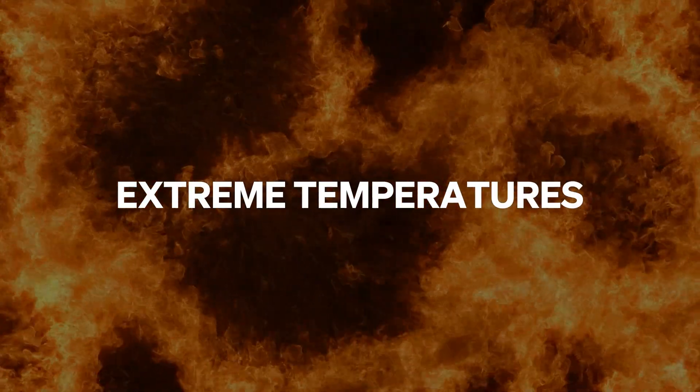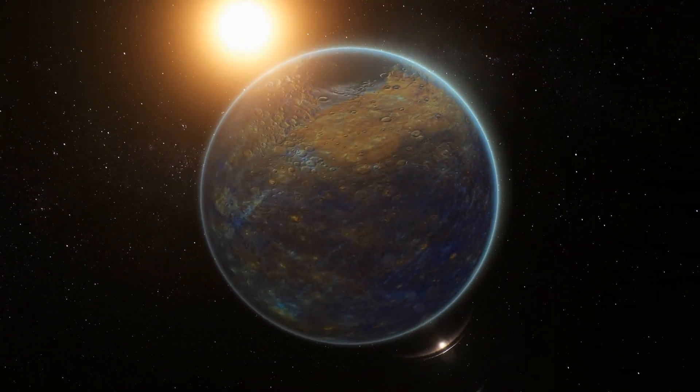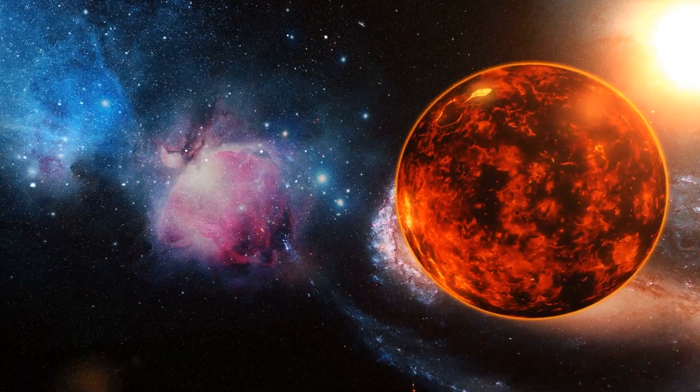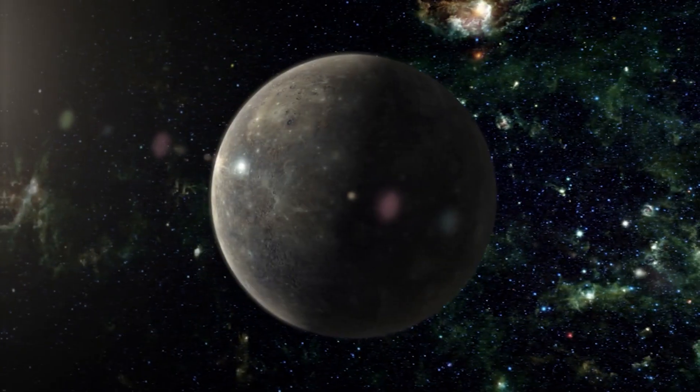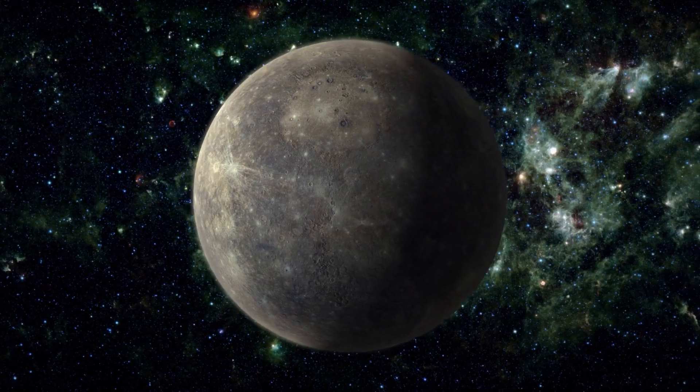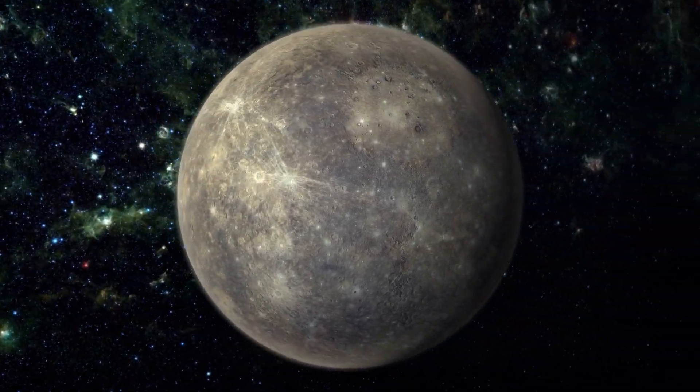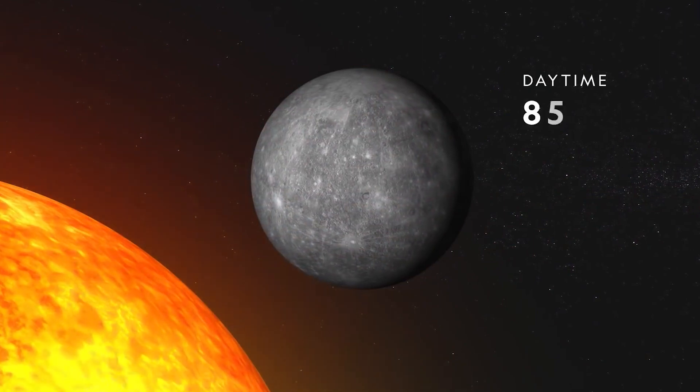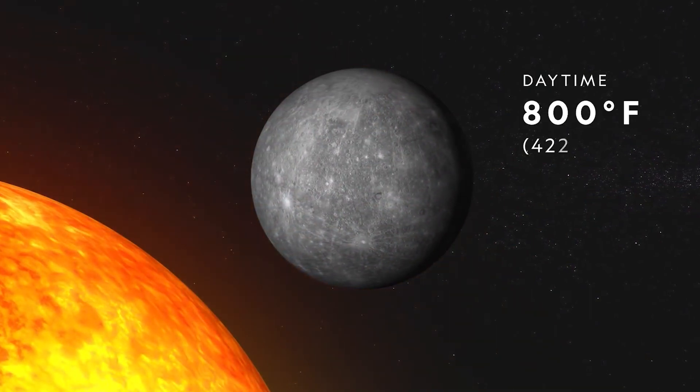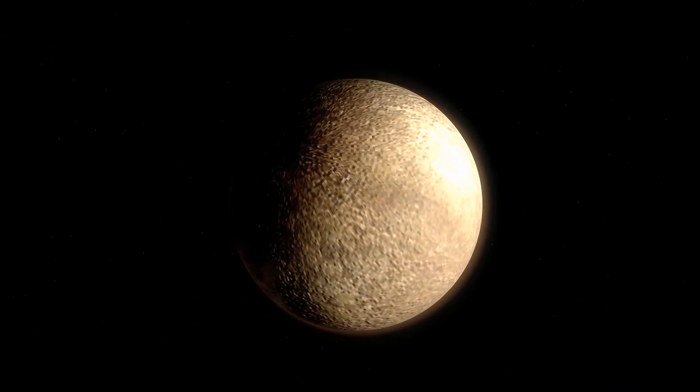Extreme Temperatures. Mercury, the closest planet to the sun, experiences mind-boggling temperature extremes that'll leave you in awe. The reason behind these wild swings lies in its unique characteristics. During the day, the surface of Mercury can sizzle at a scorching 800 degrees Fahrenheit, hot enough to melt lead.